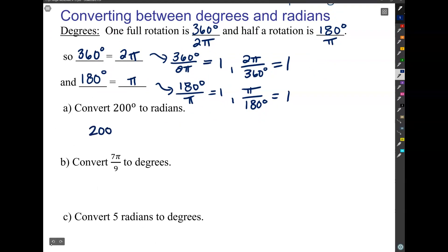So for example, if I have 200 degrees and I want to convert it to radians, I'm going to multiply by one. And I'm going to multiply by one in a very particular way.